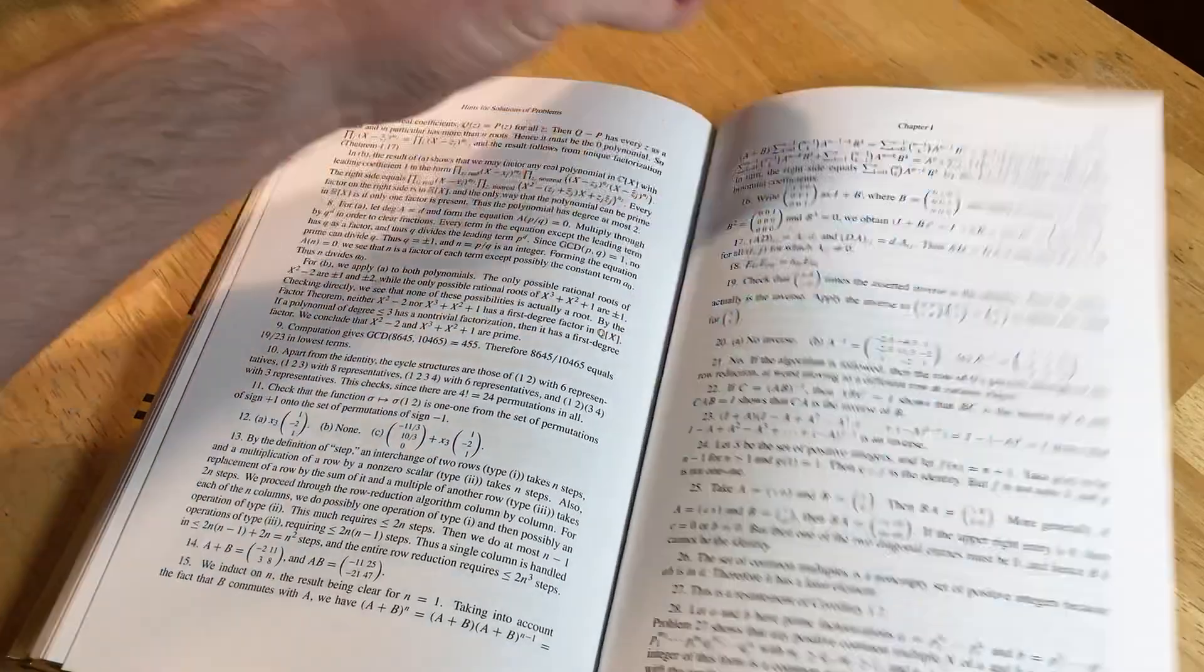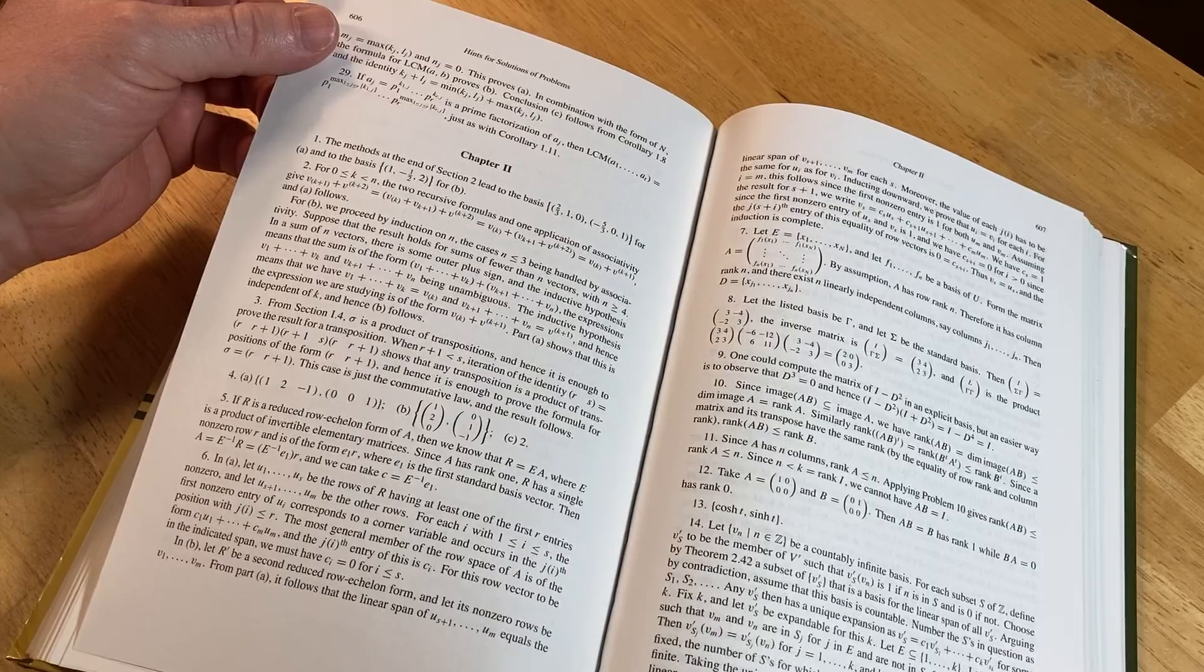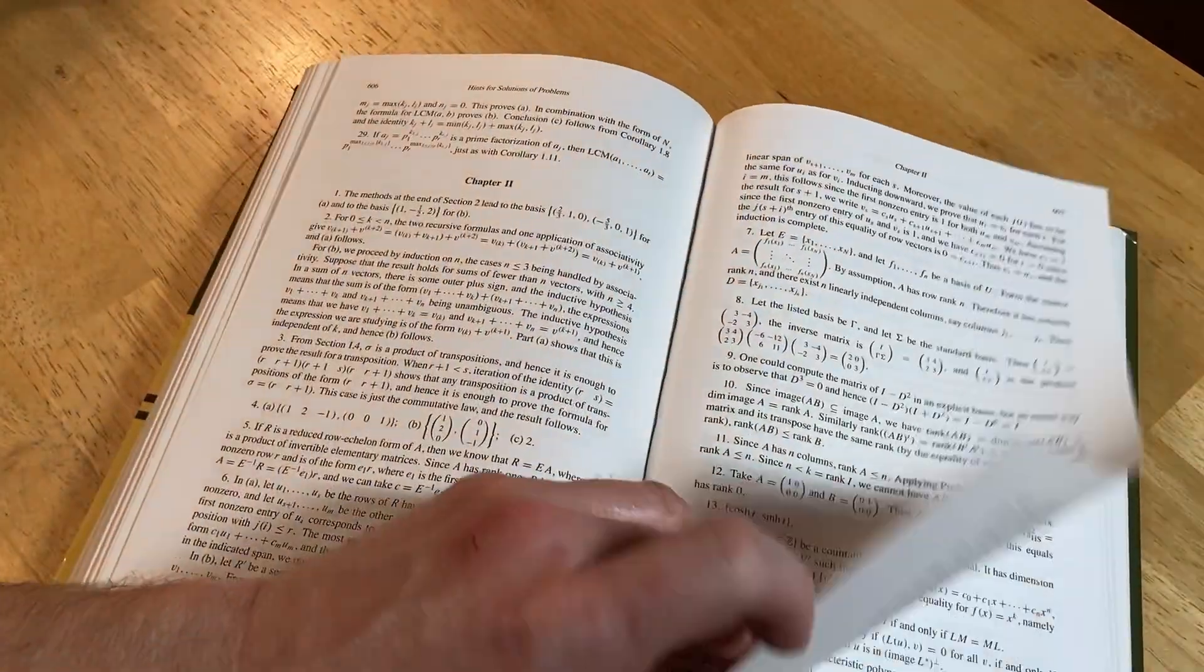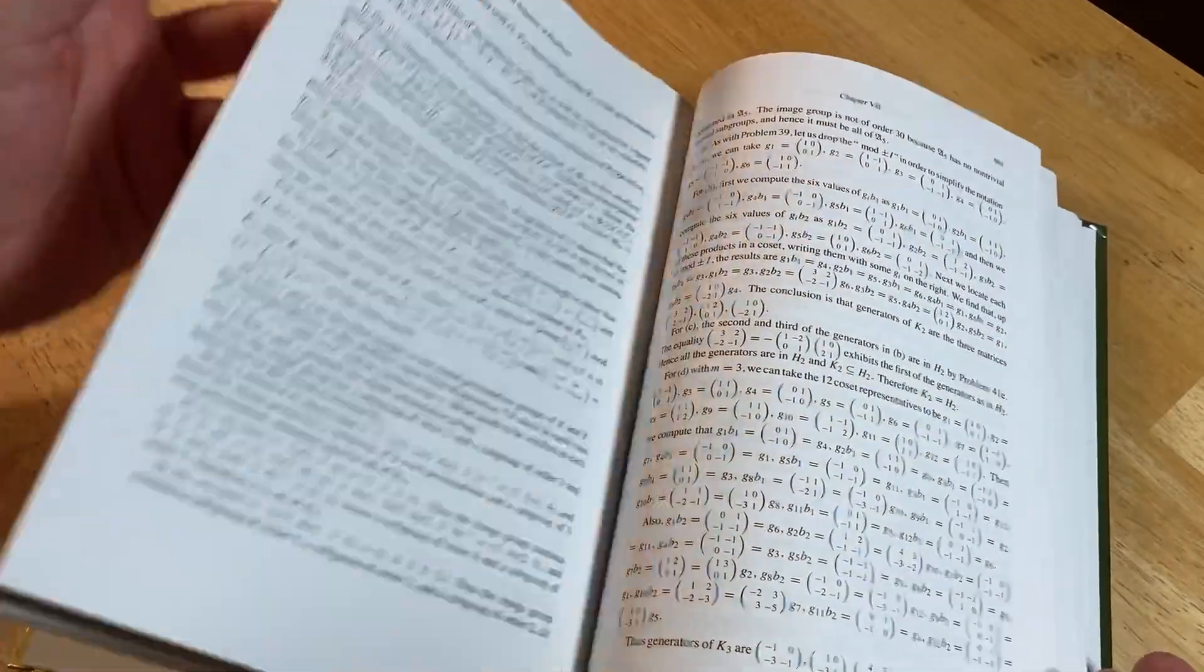So that gives it a huge advantage over other books like Dummit and Foote, which don't have much in terms of solutions. I mean this is quite a bit. It's not everything, but it's quite a bit. So it's a big help, big big help.